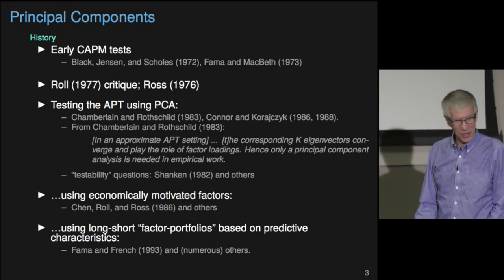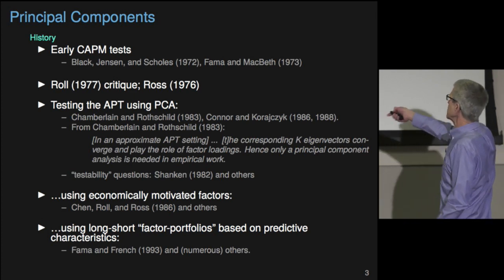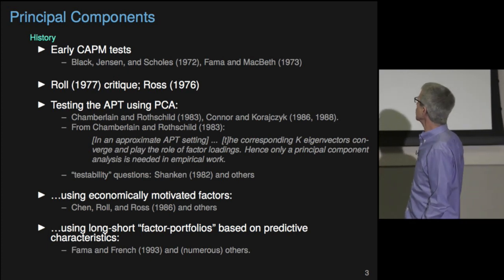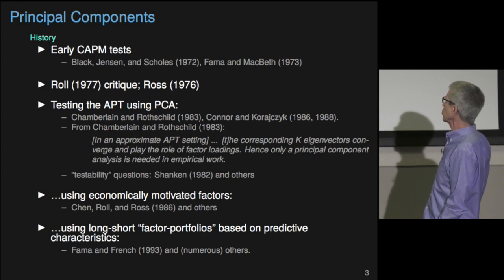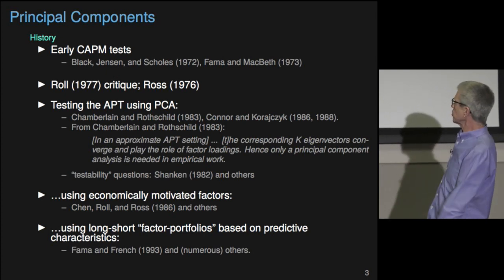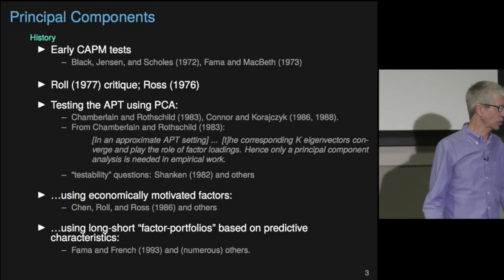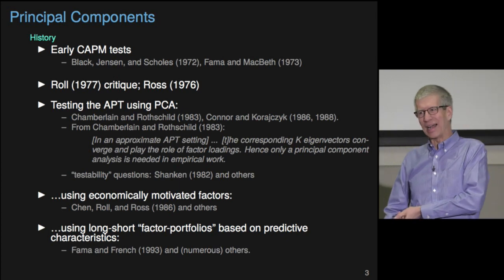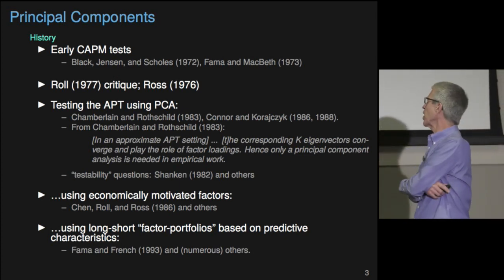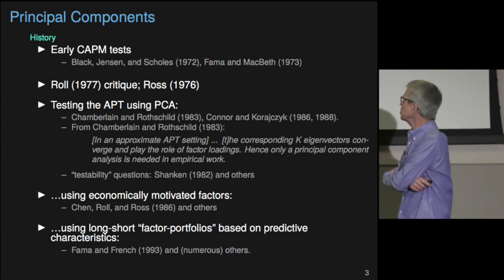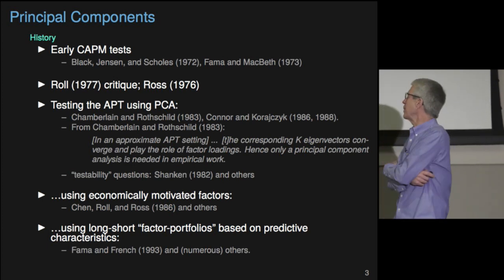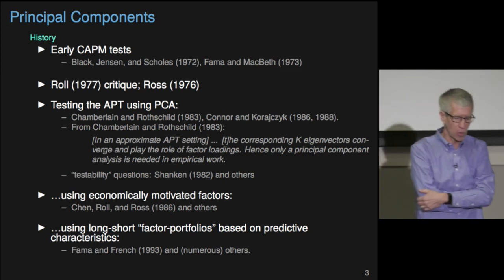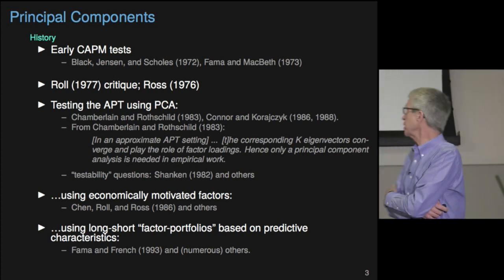As a result of this, lots of people worked on how to test the APT. The first was probably Chamberlain and Rothschild, who brought up the idea that you could use principal components analysis to figure out what the factors were. These same ideas were later exploited in Connor and Karachik. Chamberlain and Rothschild made very strong claims — from their abstract: 'In an approximate APT setting, the corresponding K eigenvectors converge and play the role of factor loadings. Hence, only a principal component analysis is necessary in empirical work.' That's all we needed. But there were some issues with this, some of which Brian already talked about, and they led to us pretty much until very recently abandoning this PCA approach. Recently, it's seen a renaissance with Brian's work and Stefano Giglio and some others.